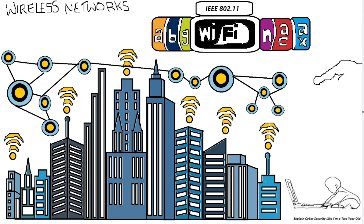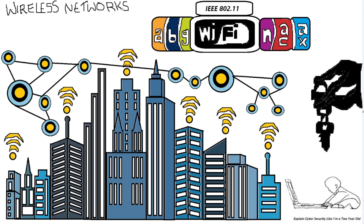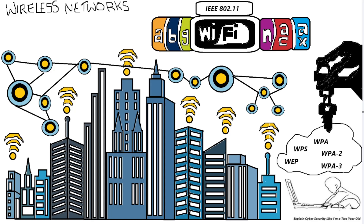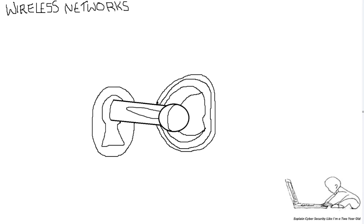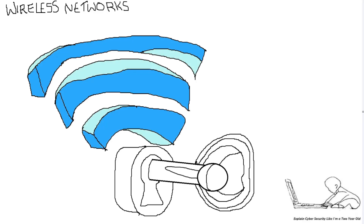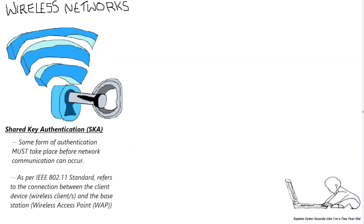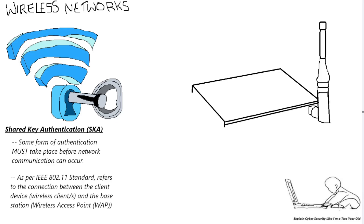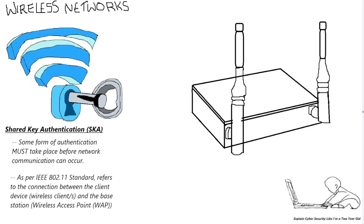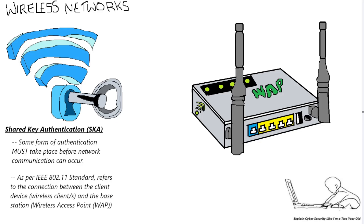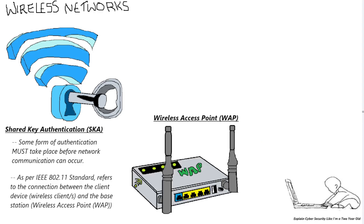We shall also cover Wi-Fi security around the authentication, encryption, and message integrity algorithms and processes used by each network. To fully understand the concept of Wi-Fi networks and their associated security features, we must first fully understand the method of Shared Key Authentication, SKA. Under Shared Key Authentication, some form of authentication must take place before network communications can occur. The 802.11 standard refers to the connection between a wireless client and a wireless access point.